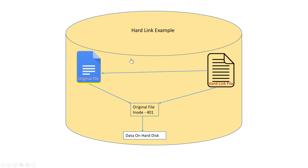For the hard link example: you have an original file and a hard link file on the hard disk, and both files point to the same inode — say 401. If you delete the original file, the hard link file will still exist on that inode value, so deleting the original does not make any difference to the hard link file. That's the difference between soft link and hard link.